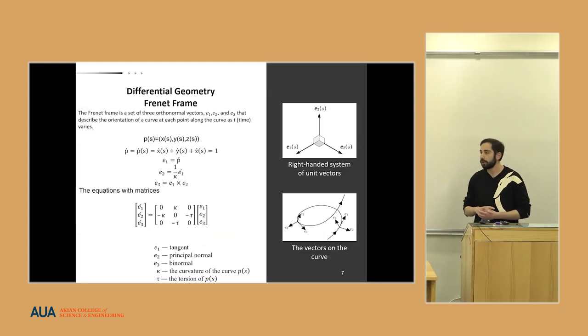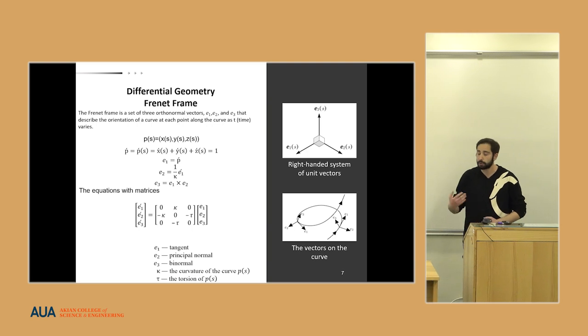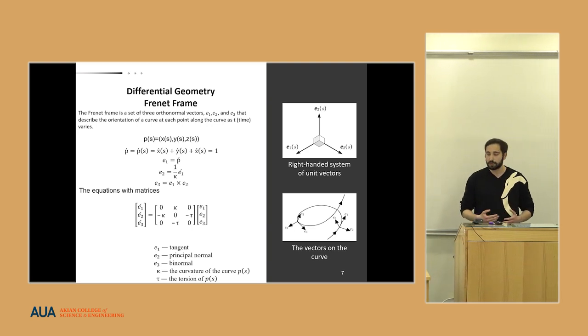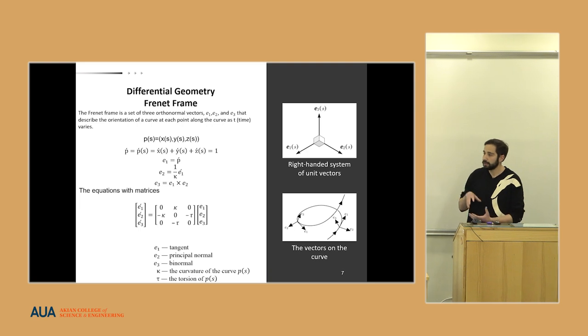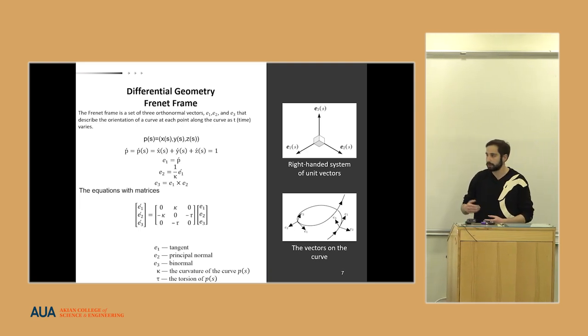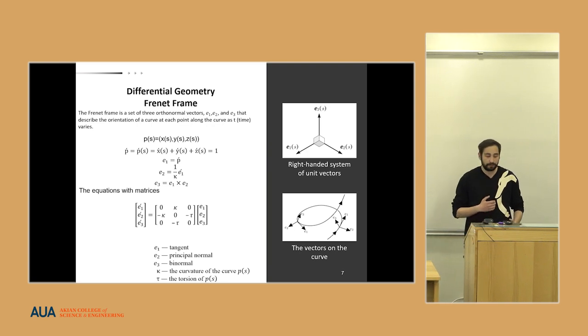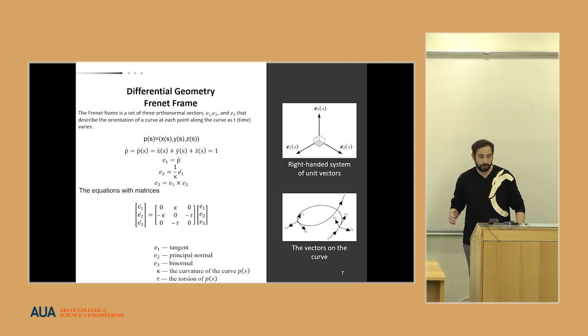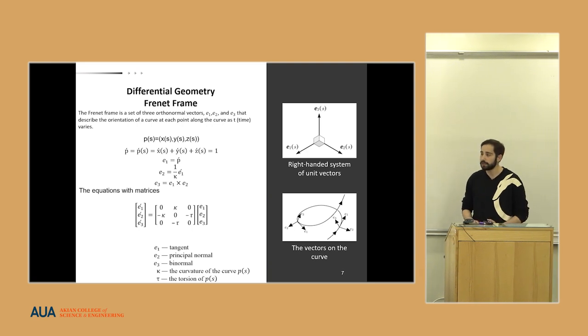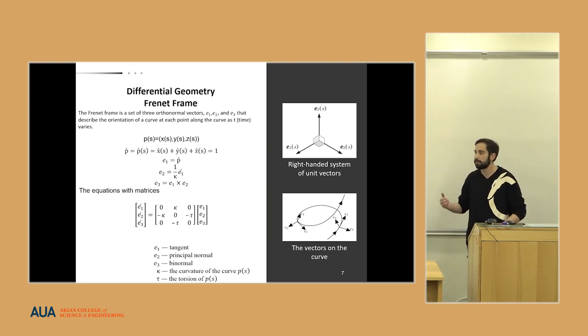Before talking about the geometrical controller, we need to define the key components that we require for the equations. We need the differential geometry and the Frenet frame, which is a set of three orthonormal vectors e1, e2, and e3 that describe the orientation of a curve at each point along the curve as time varies.